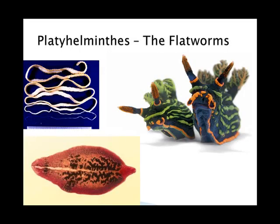The flatworms are the next big group. They're called Platyhelminthes — platy means flat and helminth means worm. These guys are the first to develop simple organ systems. So we move from no true tissues, to tissues in the cnidarians, and now simple organ systems in the flatworms. They're also the first to have three tissue layers — remember the cnidarians had two: the gastrodermis and the ectodermis. The flatworms have three: a mesoderm, an ectoderm, and an endoderm. All other animal groups past the flatworms have those same three layers, including us.